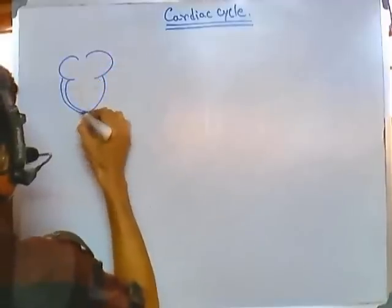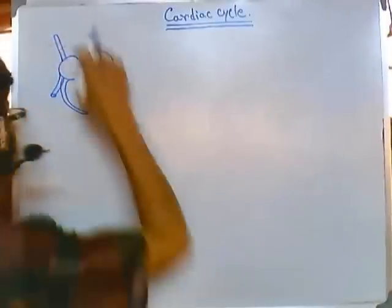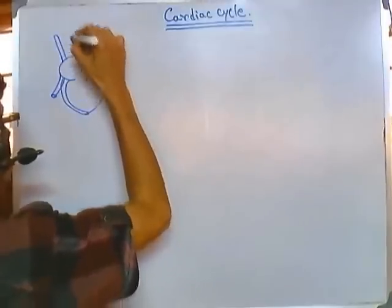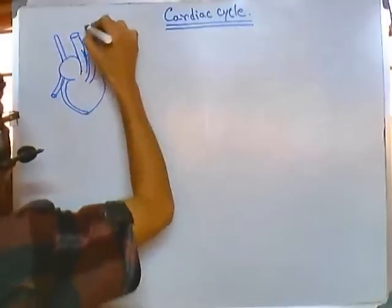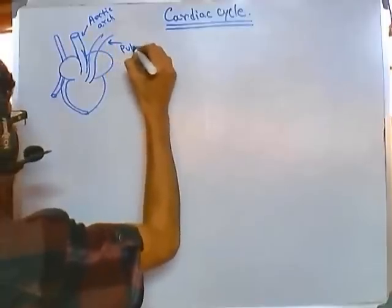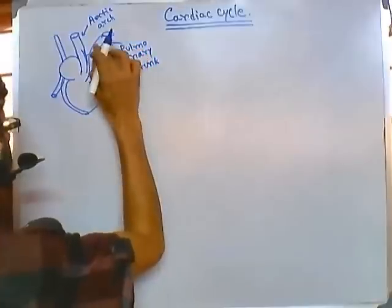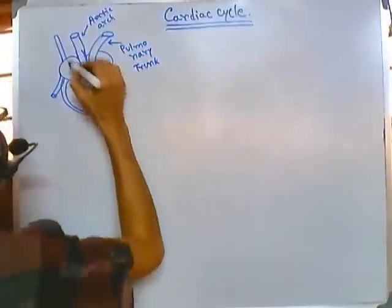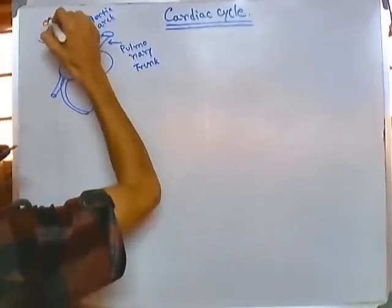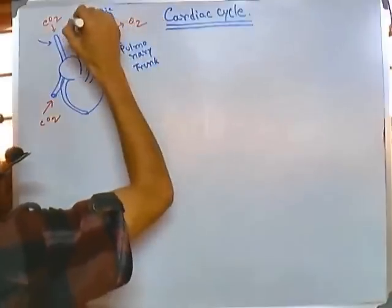So here in this heart that I am going to draw, we can see two different sections. These are called the superior vena cava and inferior vena cava. From here we are getting two major things coming in and out. This is called the aortic arch and this is called the pulmonary trunk. The aortic arch and pulmonary trunk are destined to deliver pure blood to different regions of our body, while the vena cava bring blood from different regions of the body.